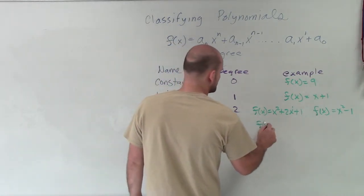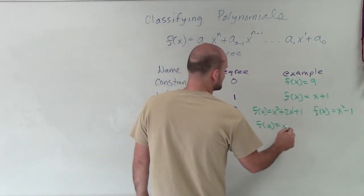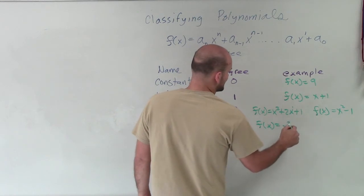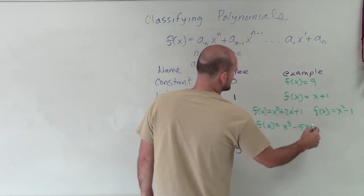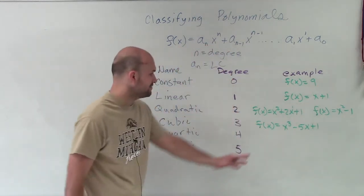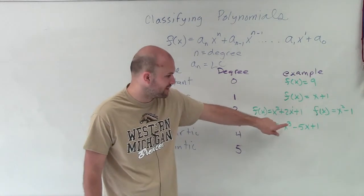So a cubic, an example of a cubic one, could be f(x) = x cubed minus 5x plus 1, where you can see the degree, the largest exponent, is going to be 3.